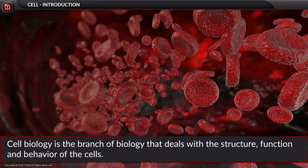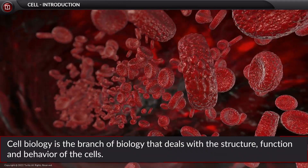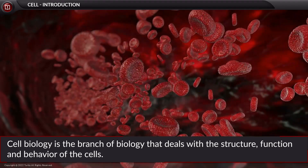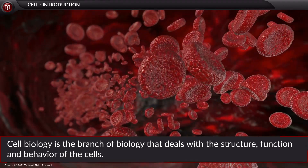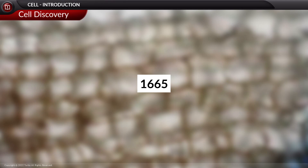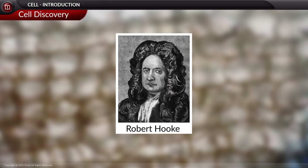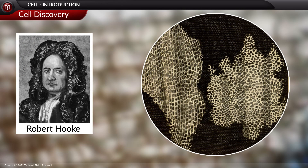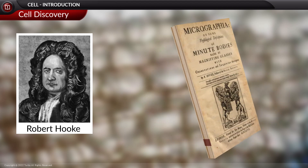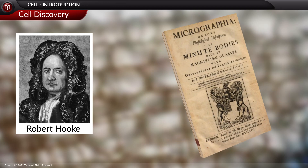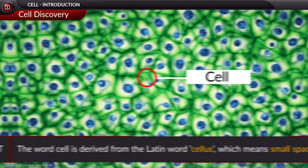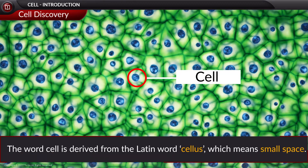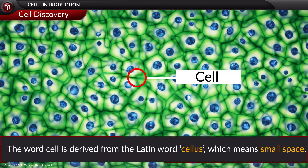Cell biology is the branch of biology that deals with the structure, function, and behavior of cells. In the year 1665, scientist Robert Hooke observed the dead cells of cork tissue under the microscope. He saw tiny box-like cavities, which he described as cells, and published his observations in his book Micrographia. The word 'cell' is derived from the Latin word 'cellis,' which means small space.